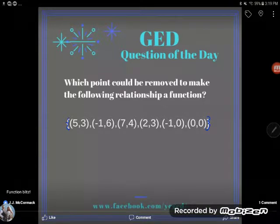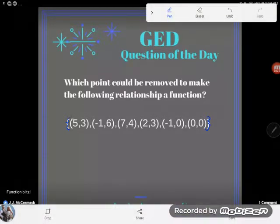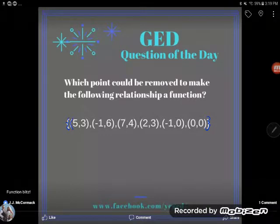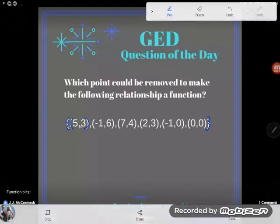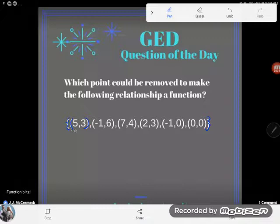And this is a point: this right here in parentheses, two numbers separated by a comma in parentheses, is how we talk about a point. This is the point (5,3).